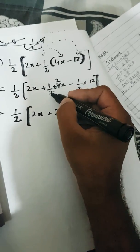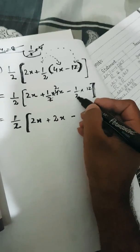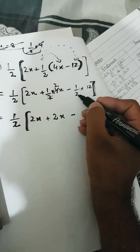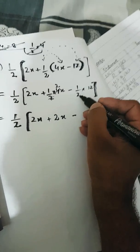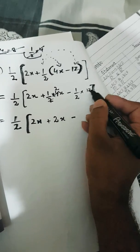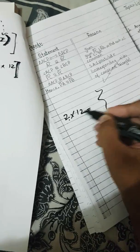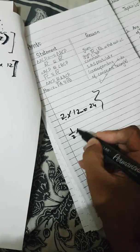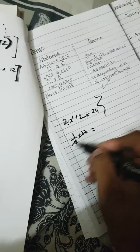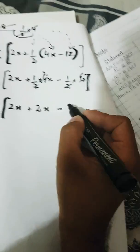Now for 1 over 2 multiplied by 12: 12 is a multiple of 2, meaning 12 comes in the table of 2. Since they are in a fraction form — 1 over 2 multiplied by 12 — you cut: 2 goes into 12 six times, and 1 times 6 is 6. So the result from the inner bracket is 2x minus 6.